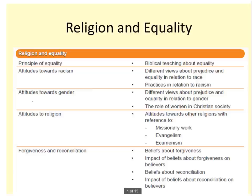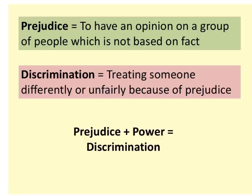The specification splits into: racism — both views and practices; attitudes towards gender, which is a very current topic, particularly the role of women in the Christian church and in Christian society, both historically and in modern times. We're also going to look at attitudes to religion, including Islamophobia, missionary work, evangelism and ecumenism. Finally, we're going to look at forgiveness and reconciliation — beliefs about forgiveness, impacts on believers, and beliefs and impacts of reconciliation.